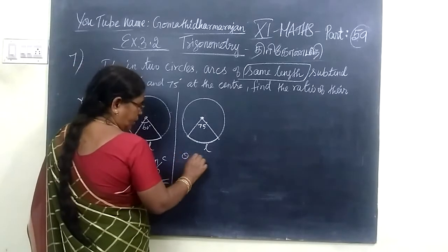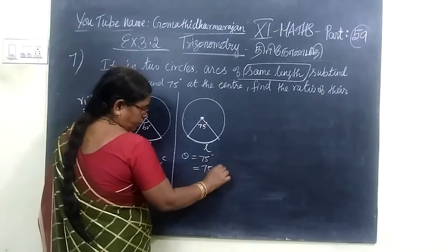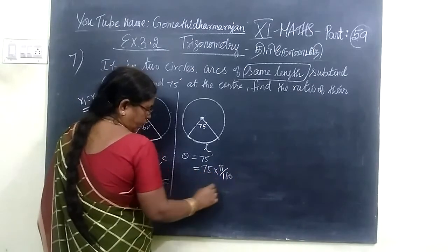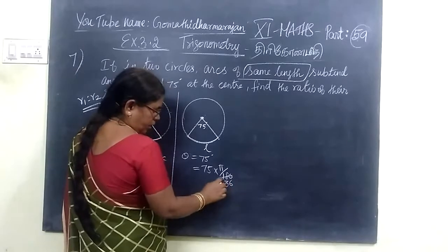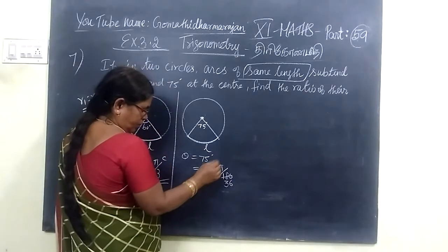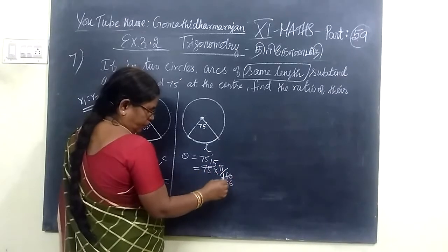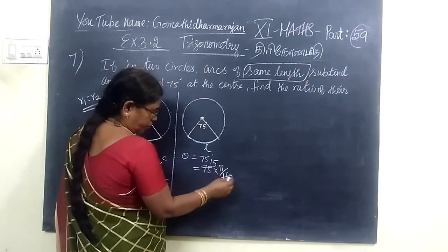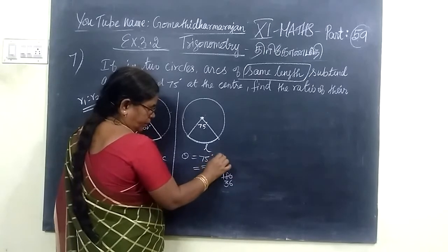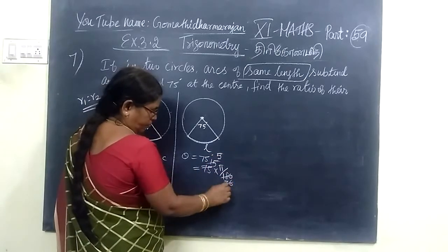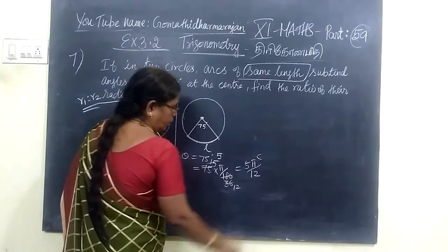Now for this case, 75 degrees. Converting to radians: 75 into π by 180. If you take common factors, this is 3 times 25. Canceling: 3 goes into 180 giving 60, leaving 25. So 5 times, taking 5 common: it's 5 times 3 equals 15 into 12. So it is 5π by 12 radians.